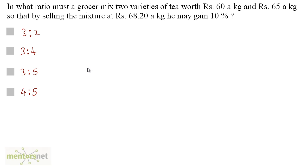In what ratio must a grocer mix two varieties of tea worth 60 Rs. a kg and 65 Rs. a kg, so that by selling the mixture at 68.2 Rs. a kg, he may gain 10%?